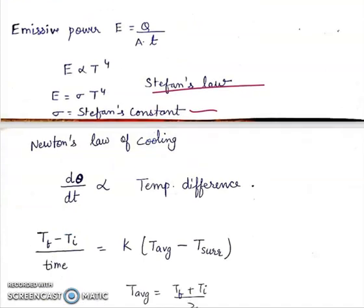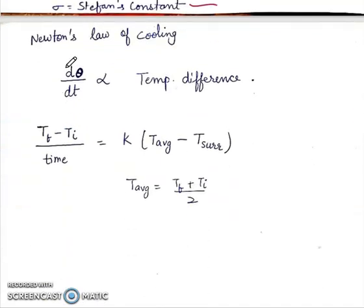Last is Newton's law of cooling. D theta by dt is directly proportional to the temperature difference. So temperature final minus temperature initial upon time is equal to K times T average minus T surrounding. Average temperature is the mean of initial and final temperature.